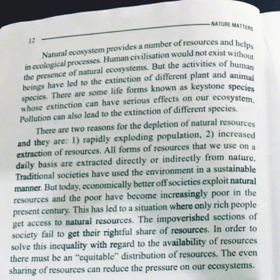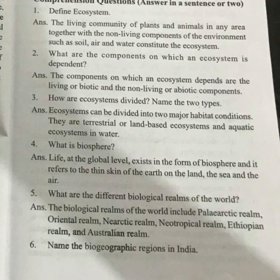We use the relationship between ecosystems and human beings to understand how they interact. The ecosystem means that the living community of plants and animals in an area, together with the non-living components of the environment such as soil, air, and water, constitute the ecosystem.